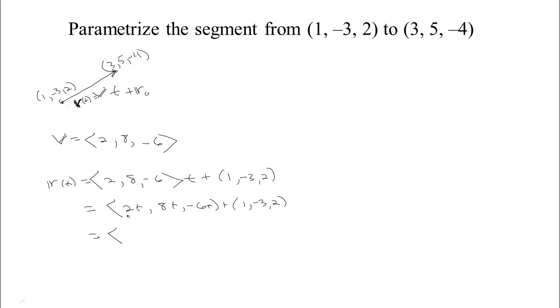And combine those. We get 2t plus 1, and 8t minus 3, and negative 6t plus 2. So we parametrize that.